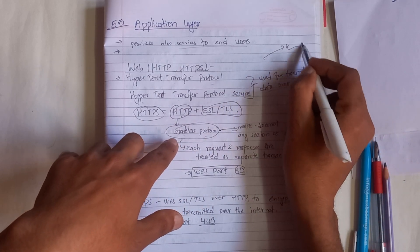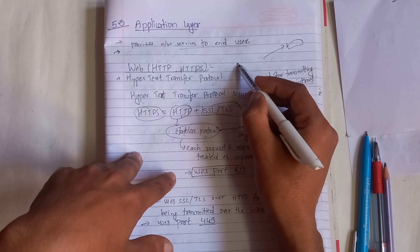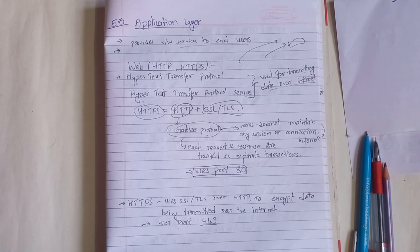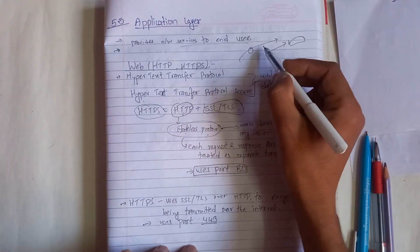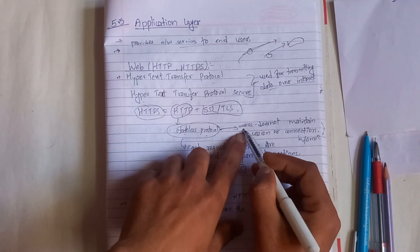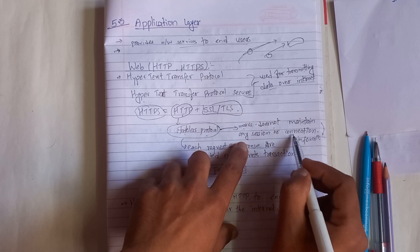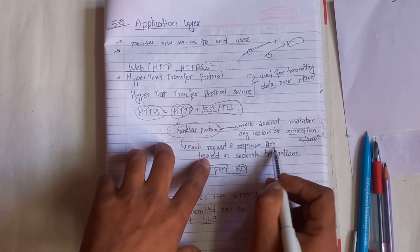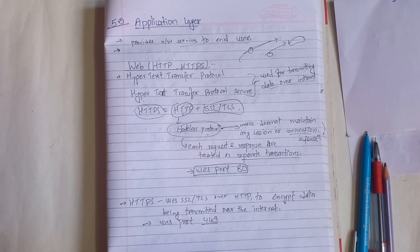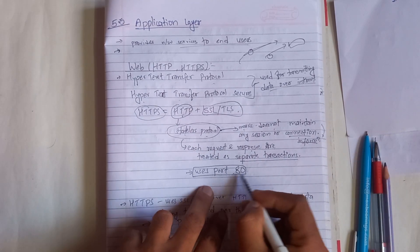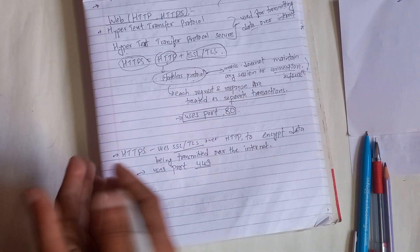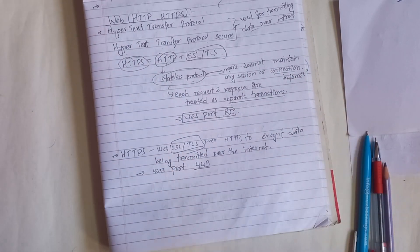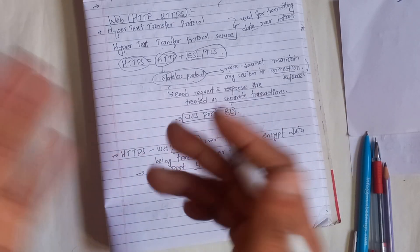HTTP does not maintain any session or connection information. Each request or response is treated as a separate transaction. Usage port: if you use HTTPS, you use SSL/TLS encryption to encrypt data being transmitted over the internet. That makes it secure.